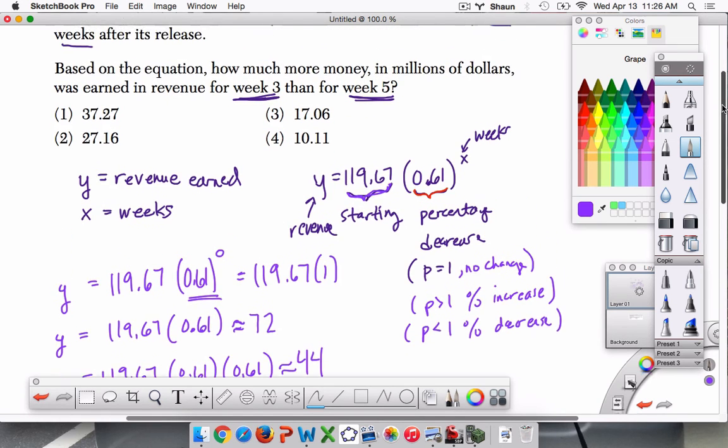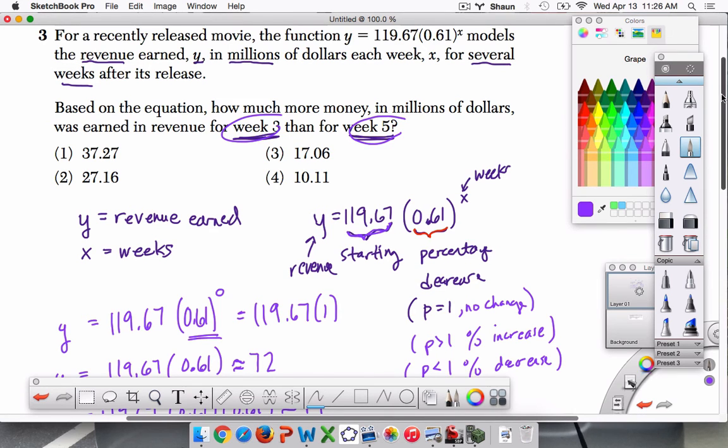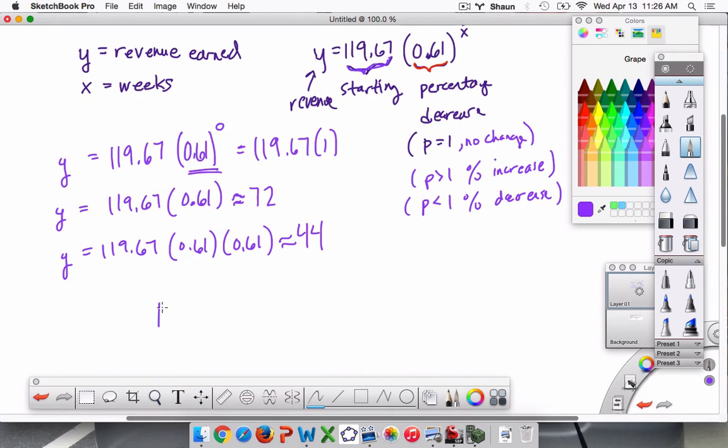But they want to know the difference between week 5 and week 3. So here we're going to set up an equation and then just solve it. And that's how I quickly solve this problem. So it's 119.67 times 0.61 to the third. That's the third week revenue, which is more than the fifth week's revenue, minus 119.67 times 0.61 to the fifth power.